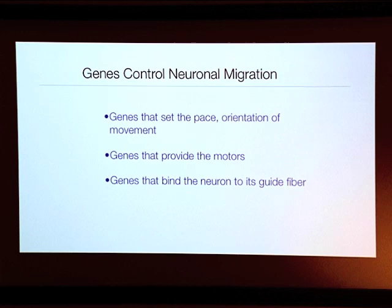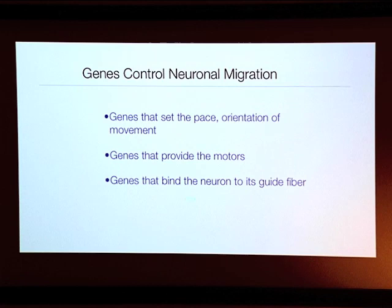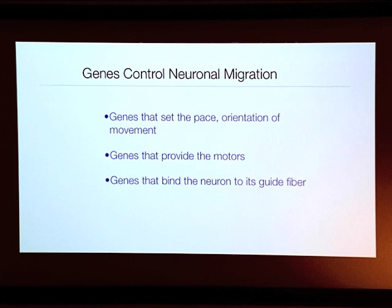We've done many other types of experiments, identified some 80 genes involved in neuronal migration, identified genes that set the pace, orientation, and polarity of movement, and genes that provide the motors. One of the most interesting questions has been: what genes bind the neuron to the glial fiber? What helps the young neuron tell the glial fiber the proper way to migrate? One of these genes we discovered some years ago and named astrotactin. It's the glue sitting underneath the cell body of the neuron as it pauses between steps.